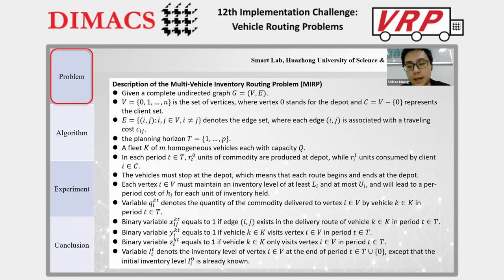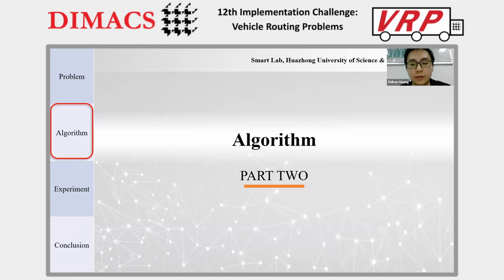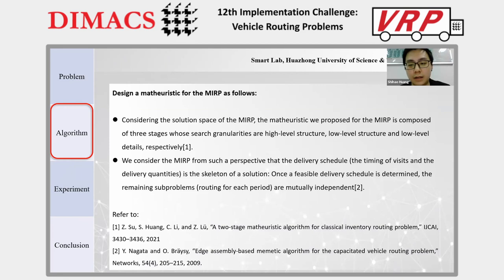Based on the problem description and variable definitions, we develop a MIP model for the problem. Then, in order to solve this problem, we propose a three-stage meta-heuristic. Before the formal introduction, we list the starting points for the design of our algorithm. The meta-heuristic is composed of three stages whose search granularities are high-level structure, low-level structure, and low-level details respectively.